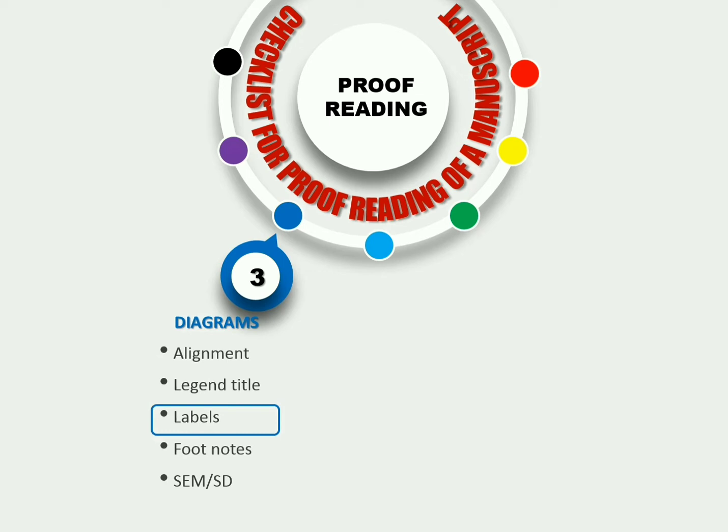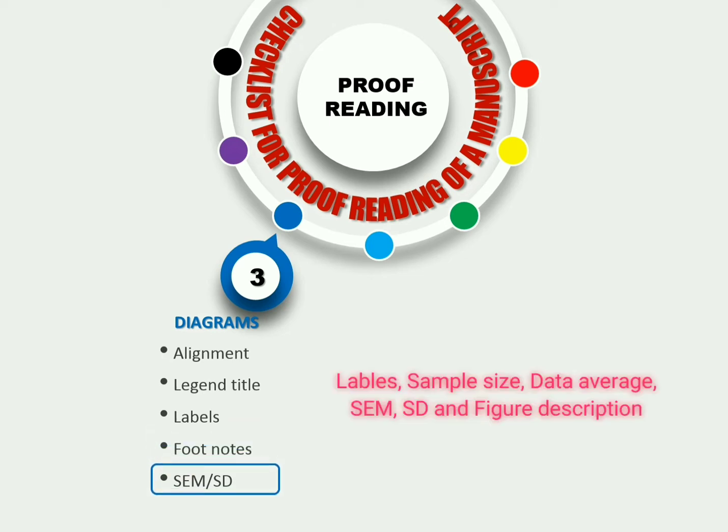Labels are also very important to help understand the figures. We cannot describe figures with some large labels; they should be used logically. Labels are used in a fashion that may help make figures self-explanatory. Furthermore, you should check if all the labels are described in the footnote or not. Yes, footnote should be filled with the elaborations of the labels, sample size, data average, standard error mean, standard deviation values, and some description of the figure content.